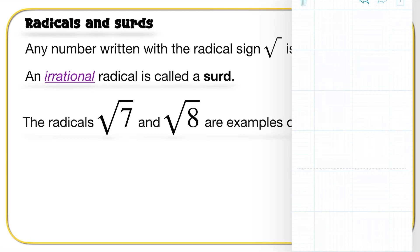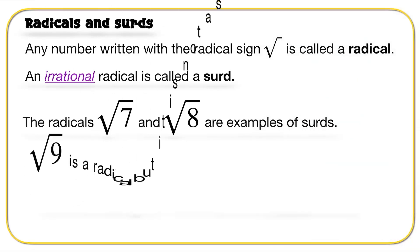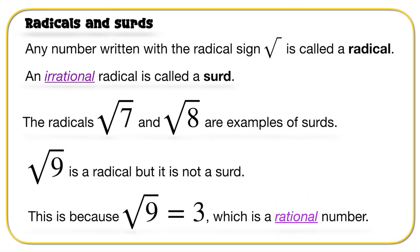Let's have a look at the next example. Root 9 is a radical, but not a surd. That's because root 9 is equal to 3, which is a rational number. So the difference between a radical and a surd is that a surd has an irrational result.